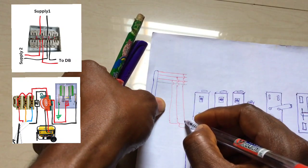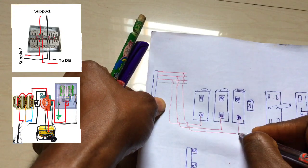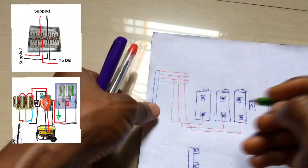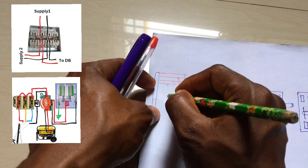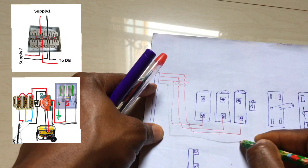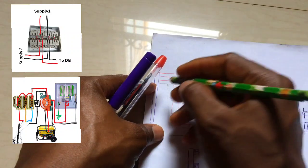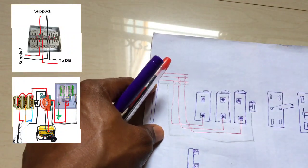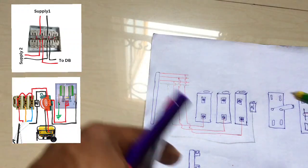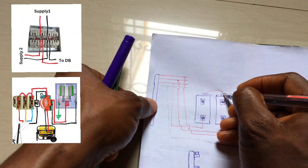This is a three-phase supply system. The third phase comes here, so the three-phase supply has been connected. The last one is our neutral — neutral travels to the neutral link. Some people do not use a neutral link; they just join it directly without this component. This is how the fuse supply is done.